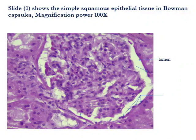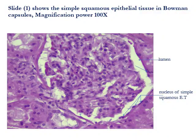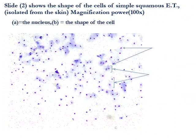This slide shows the simple squamous epithelial tissue in Bowman's capsule in the kidney. We can see the nucleus of the simple squamous epithelial tissue. This slide also shows the shape of the cells of simple squamous epithelial tissue isolated from the skin, where A refers to the nucleus while B refers to the shape of the cell.